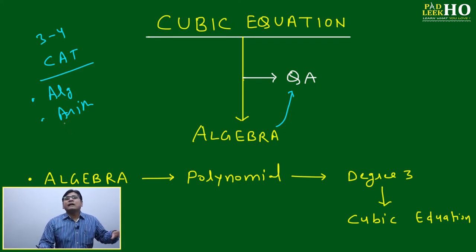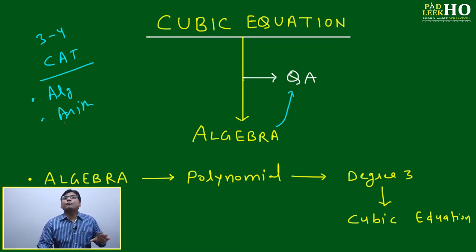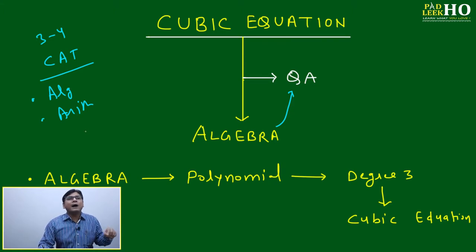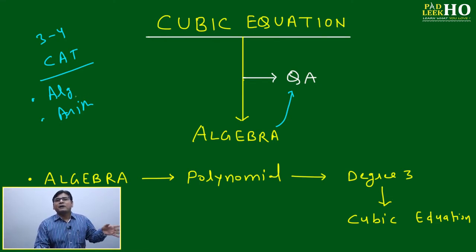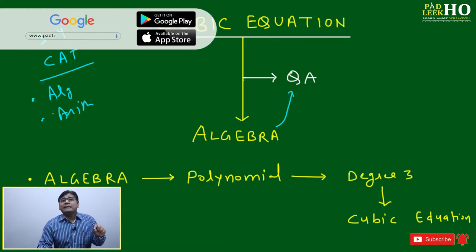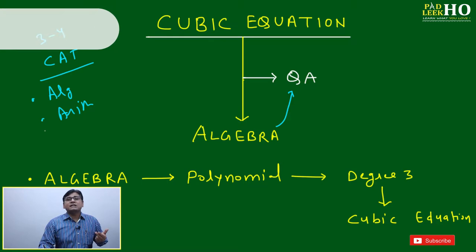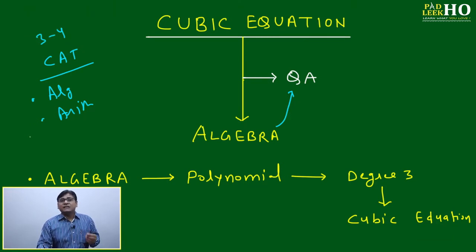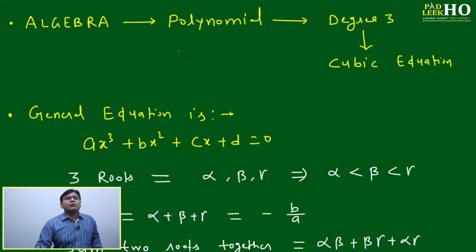Earlier, number and geometry questions used to come more, and algebra and arithmetic questions used to come less. But now algebra questions are coming more than numbers and more than geometry, and arithmetic is second. These two chapters deserve a little more effort. Any trend in CAT will continue for a few years before a new trend comes, but currently algebra and arithmetic in quant is the trend.